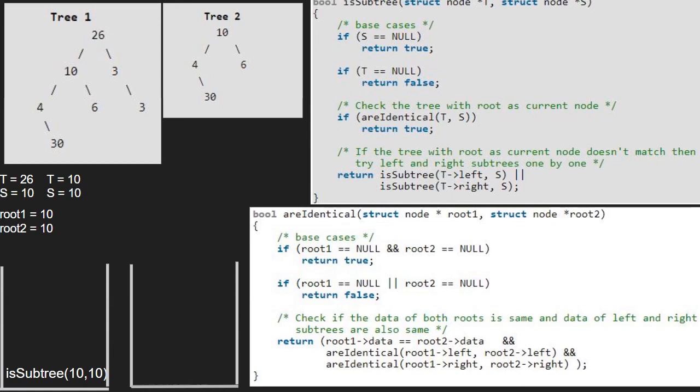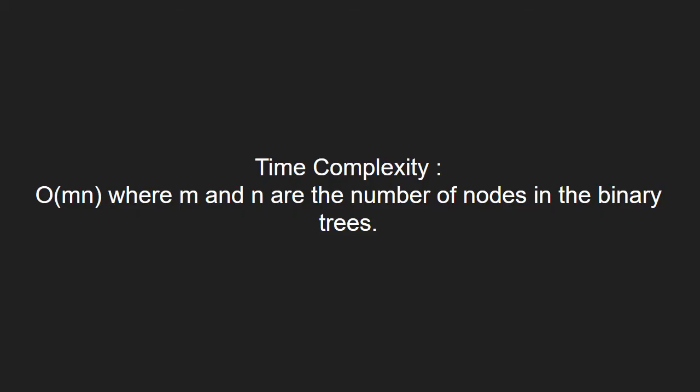Now, let us see the time complexity of the program. This code will run in O of m into n complexity. Here, m and n are the number of nodes in the two binary trees.